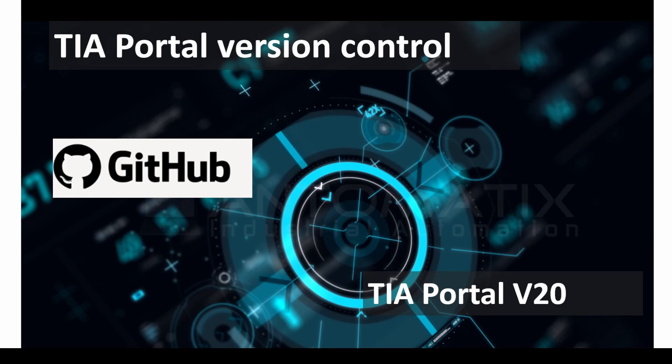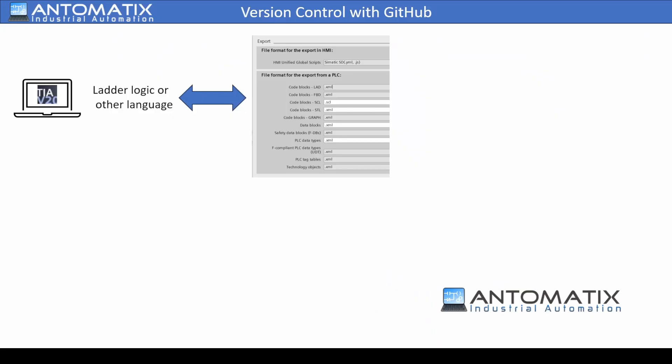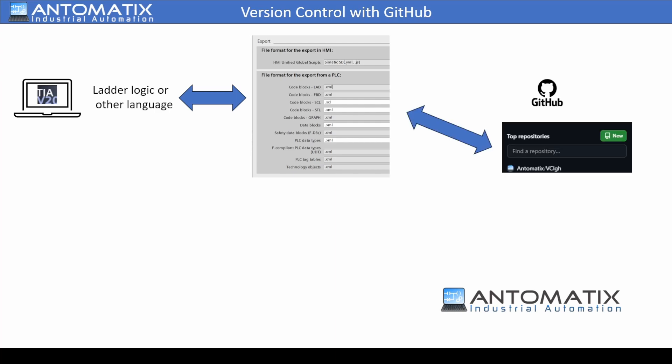Hello, I will show you in this video how we do version control for our TIA Portal projects using GitHub. TIA Portal program is exported in form of XML or SQL, as you can see in the table, and then pushed to GitHub which stores the program online.